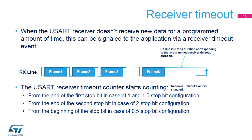The USART supports a receiver timeout feature. When the USART doesn't receive new data for a programmed amount of time, a receiver timeout event is signaled and an interrupt is generated if enabled. The USART receiver timeout counter starts counting from the end of the first stop bit in case of 1 and 1.5 stop bit configuration, from the end of the second stop bit in the case of 2 stop bit configuration, and from the beginning of the stop bit in case of 0.5 stop bit configuration.